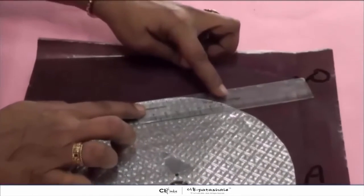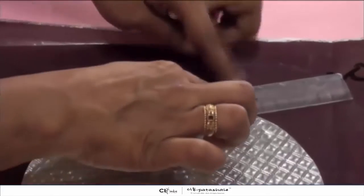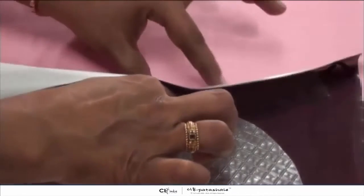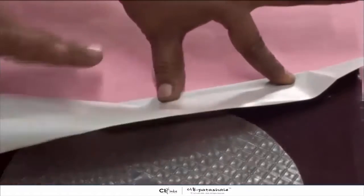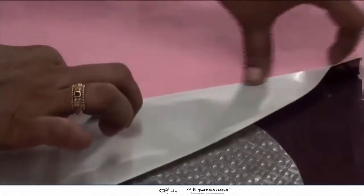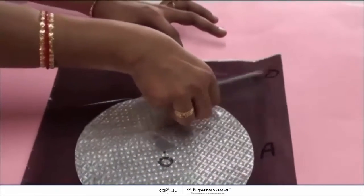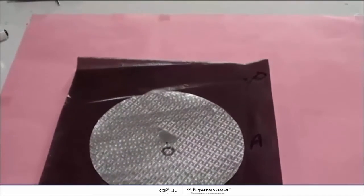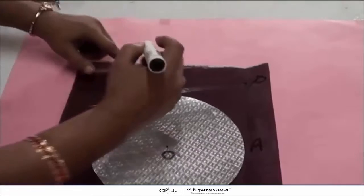So again we take a ruler, and with the help of a ruler, we try to fold the paper to get the second tangent. And we name that point of contact as B.